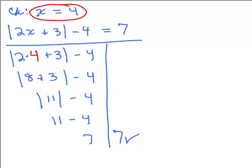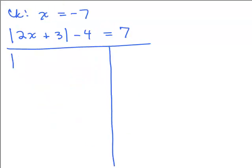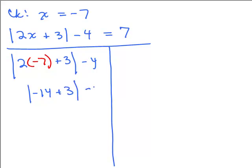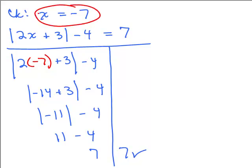Now we'll check the other solution. We're going to plug in negative 7 for x. Inside the absolute value I have negative 14 plus 3. Simplifying inside, we've got negative 11, so I have absolute value of negative 11, minus 4. The absolute value of negative 11 is 11, so I have 11 minus 4 is 7 — that checks. So the solutions to the problem are 4 and negative 7.